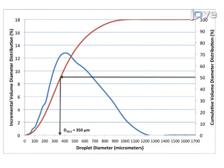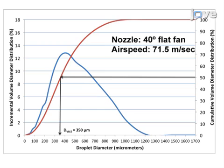For comparison, this is the data for a 40-degree flat fan aerial spray nozzle with a number 15 orifice, operated at 207 kPa and an airspeed of about 72 meters per second. The incremental distribution in blue is significantly shifted towards smaller droplet diameters in comparison to the first data set. This is the result of secondary droplet breakup due to increased airspeed. Using the cumulative distribution, 50% of the spray volume is contained in droplets of diameter 350 micrometers or smaller.